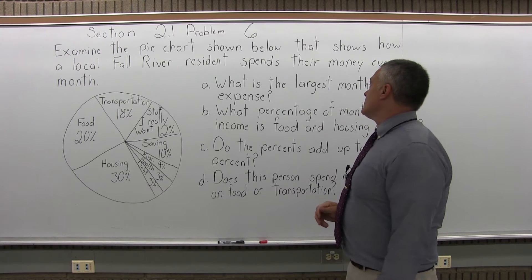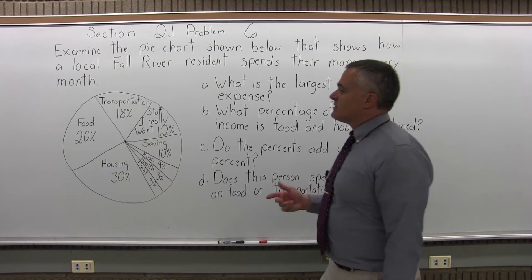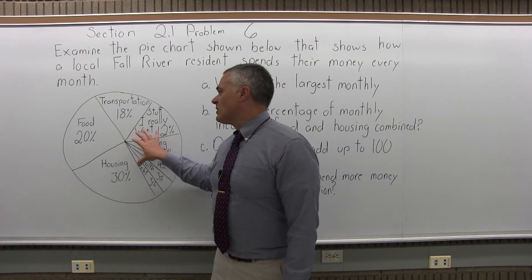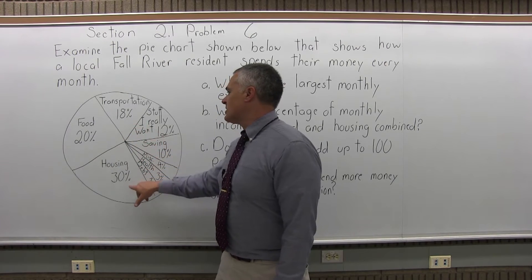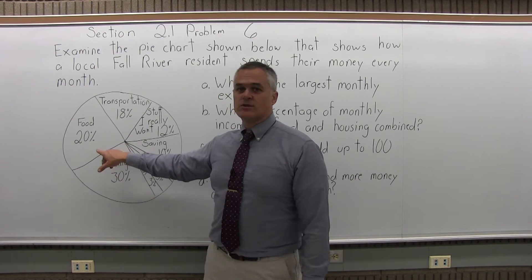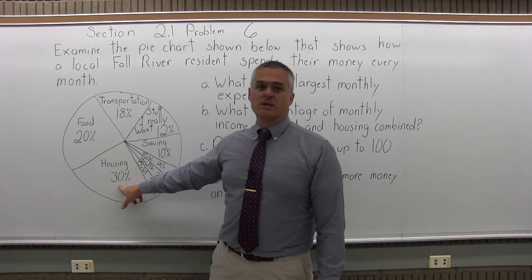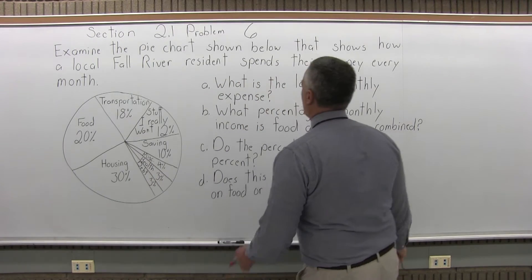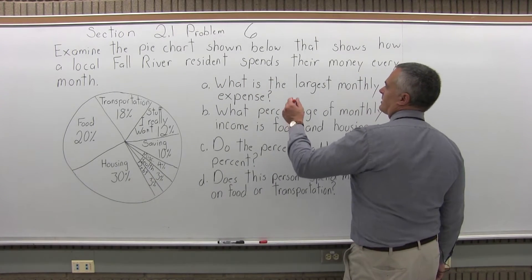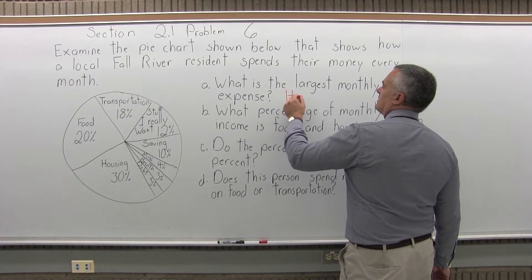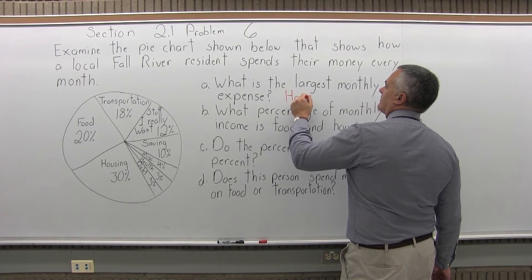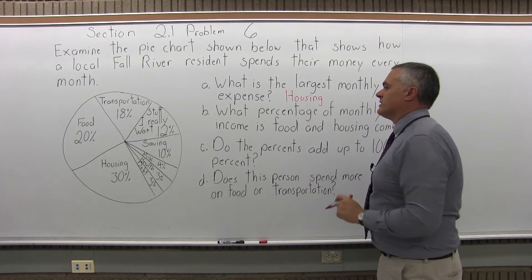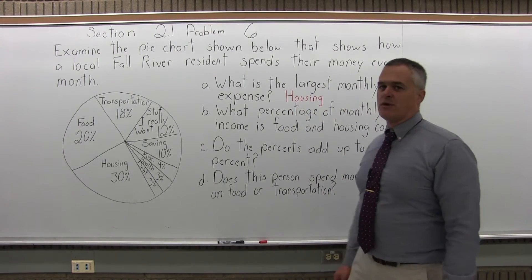Part A: what is the largest monthly expense? You can tell not only by the size of the wedge itself, but the percentages included. The largest monthly expense is housing at 30%, which is probably pretty typical.